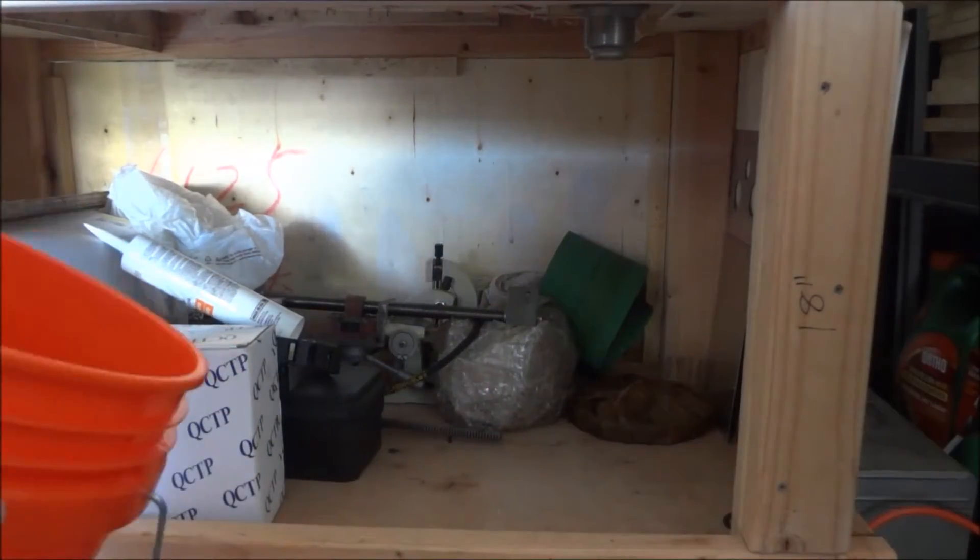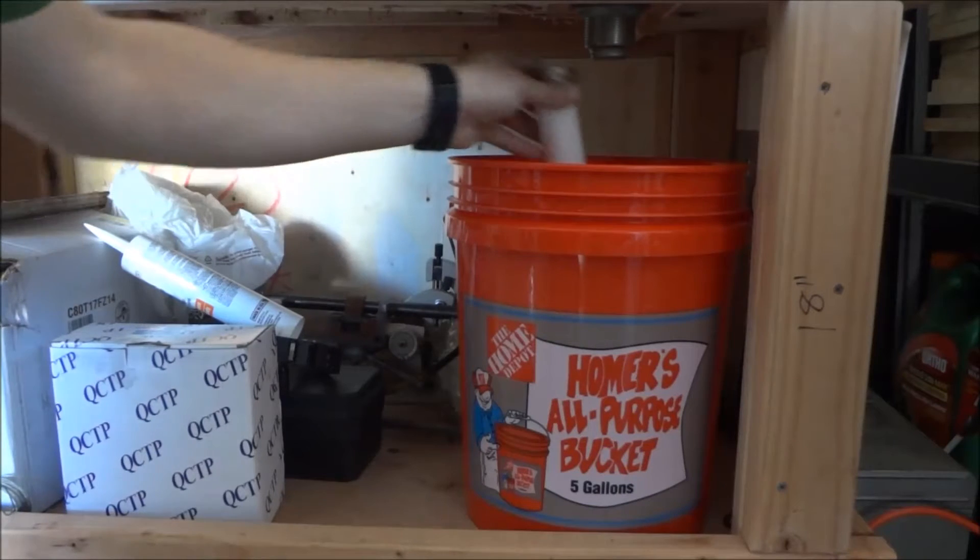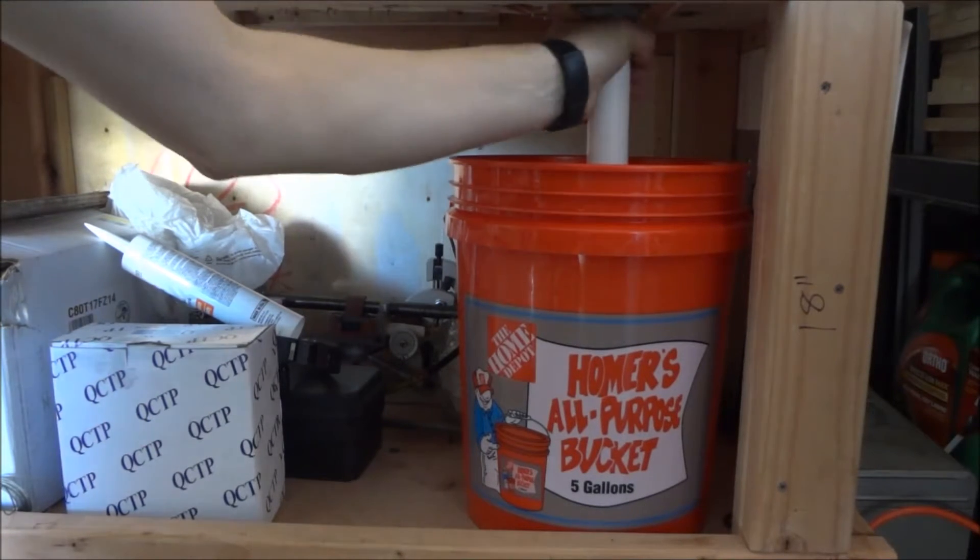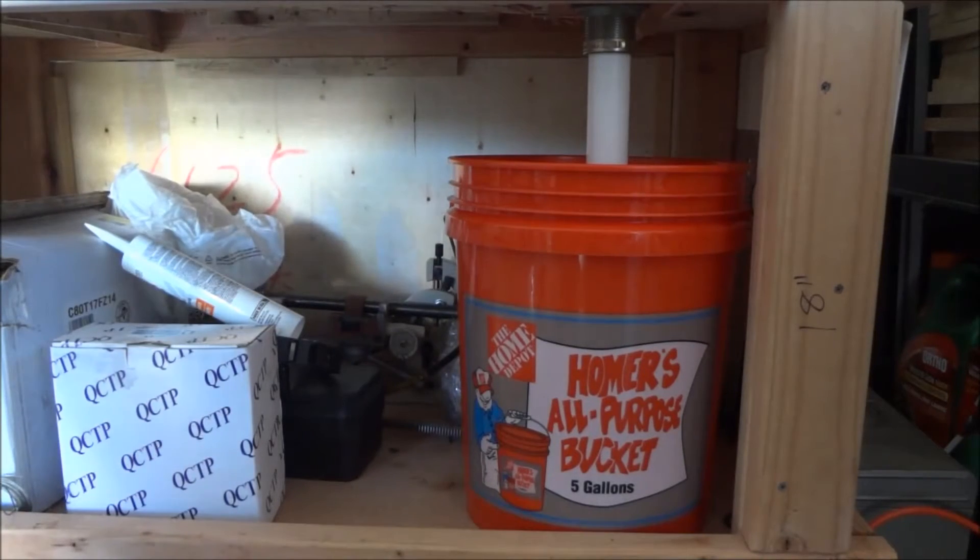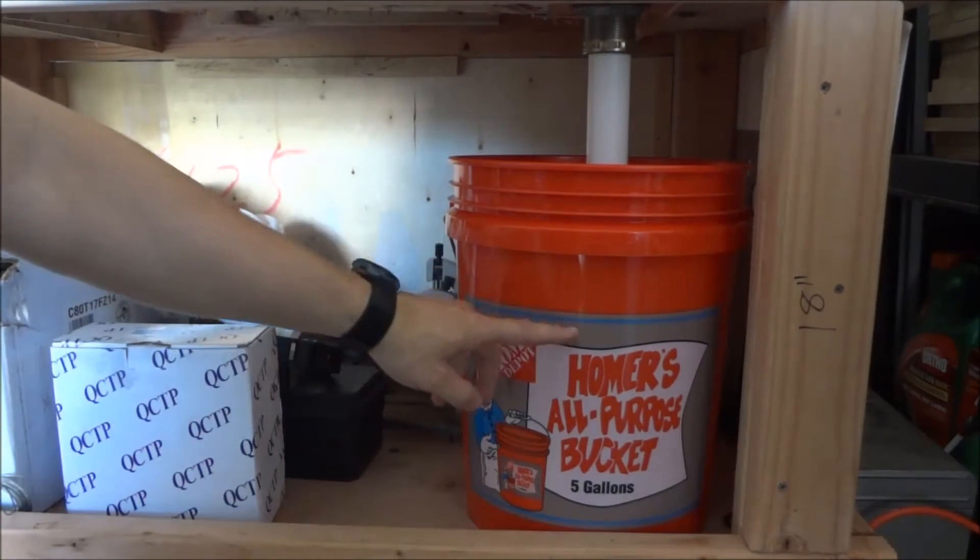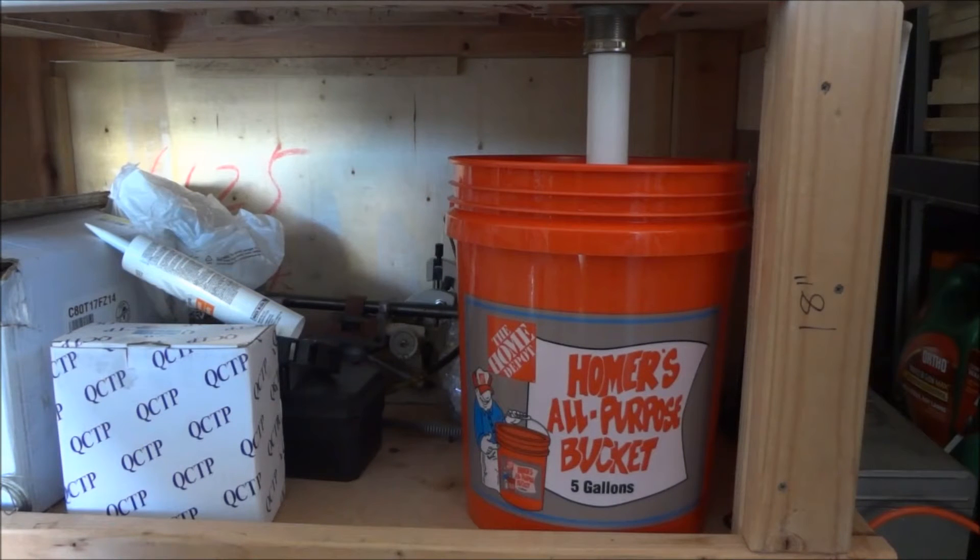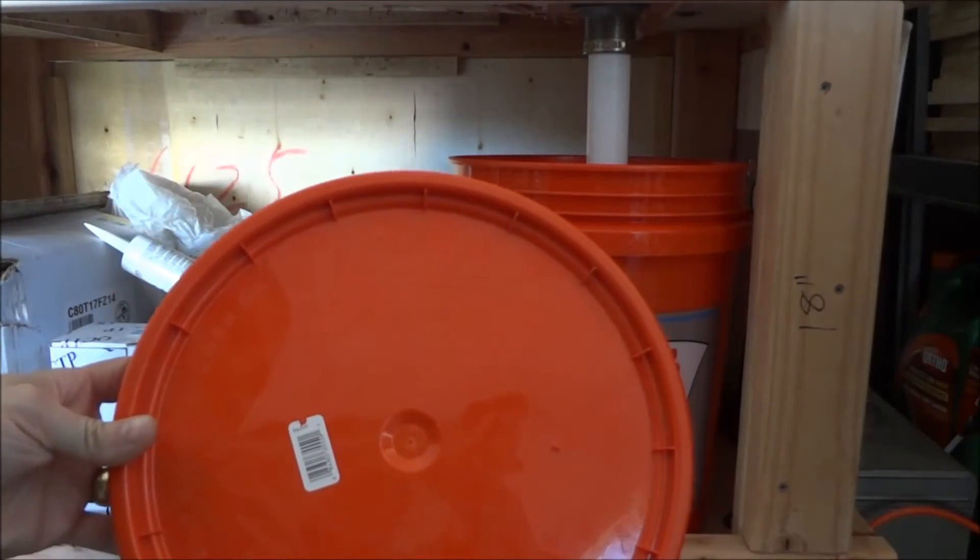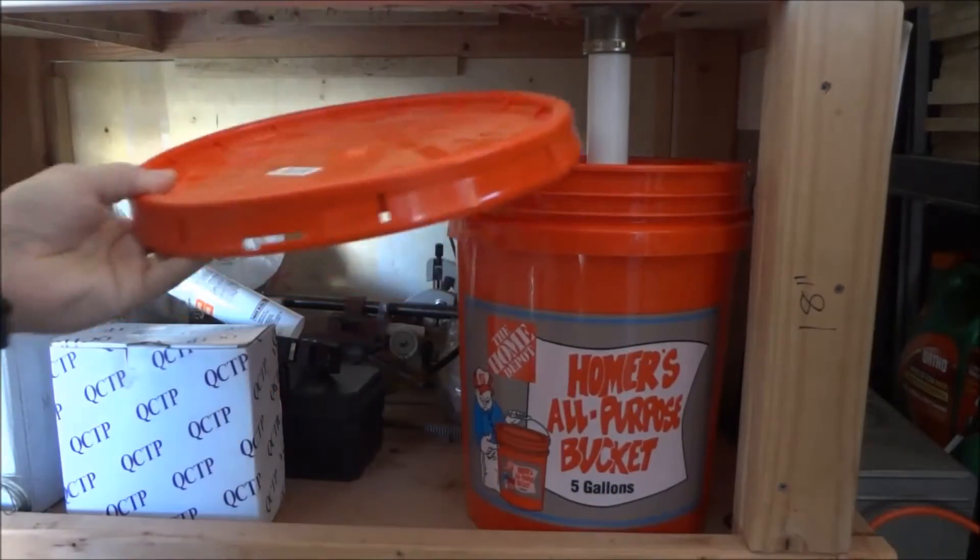So the idea is just to have the bucket with the drain dropping down into the bucket like so. Now you may find they do sell smaller like three gallon buckets and you might find that a little bit more suited than the five gallon, but this is what I picked up so I'll go ahead and use this. So what we got to do now is put a hole in our lid.